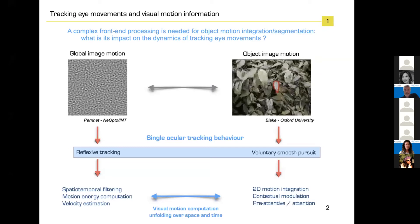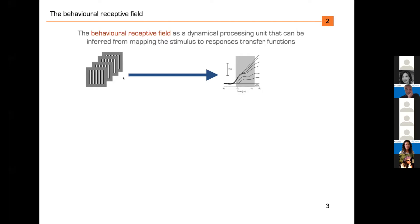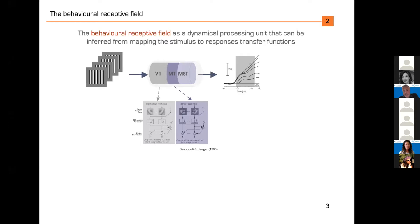To address this, we proposed a theoretical framework called the behavioral receptive field. In our lab, we present stimuli to monkeys or humans and record eye movement responses. The question is what is the 'black box' between input and output? One approach is to identify the series of computational steps needed to transform the input to the output, and to relate each step to driving the eye movement. It's called 'behavioral' because it's defined at the behavioral level.